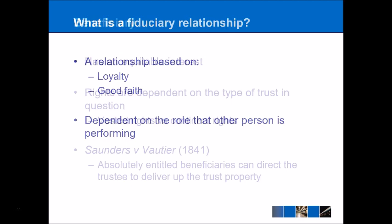The beneficiary is the final person in our tale. The beneficiary has an equitable interest in the property, and their rights are dependent on the type of trust in question. In a bare trust or a fixed trust, the beneficiary has vested rights — a clear right to the property. However, in a discretionary trust there can be contingent rights. Going back to the example of the parent and the most well-behaved child, the beneficiary's rights are contingent on them behaving best throughout the year and therefore being entitled to the relevant money.